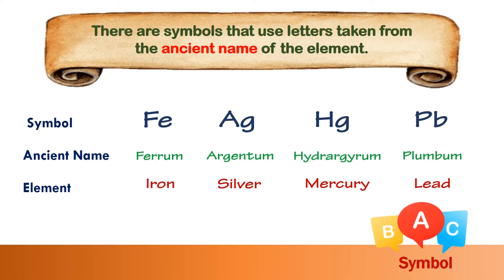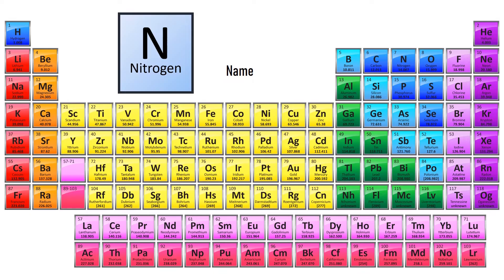So, you already know about the names of elements and their symbols. Now, let us talk about their atomic number. In each box, we will find a number on top of each symbol. This is the atomic number. But what is atomic number?